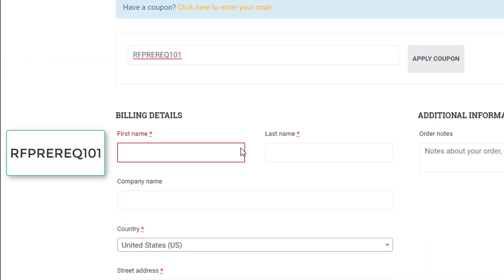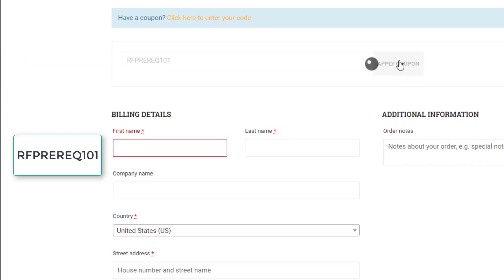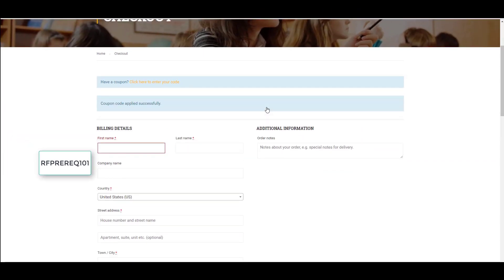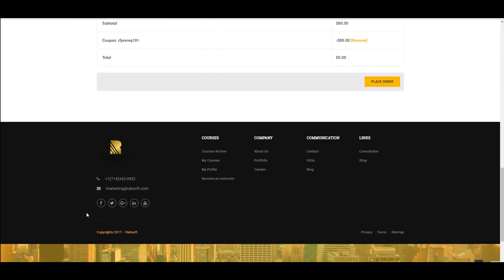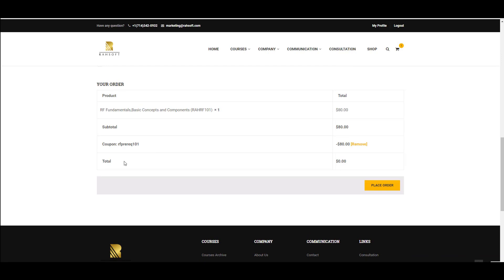all you need to do is going to the course landing page and go to checkout. And as you see, click to enter your code. You can put the coupon code here and then apply the coupon. So then you will have this course for free and you can take this course. As you see, you won't pay anything for this course.